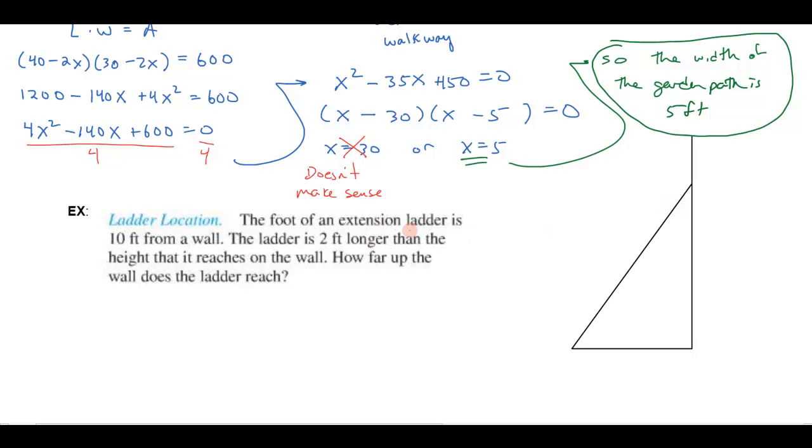So it says the foot of an extension ladder is 10 feet from the wall. So, I'm imagining that this is my ladder. So, maybe if we want to label that. And here's the wall over here. And it says that that's 10 feet away from there. And then it tells me something about the length. It says the ladder is 2 feet longer than the height it reaches on the wall. So it's talking about this height right here. Here's the height it reaches on the wall. Notice it didn't say it's the height of the wall. It's the height the ladder reaches on the wall.